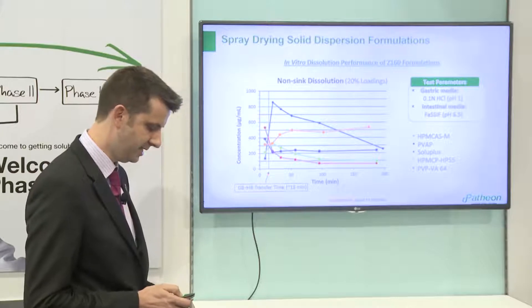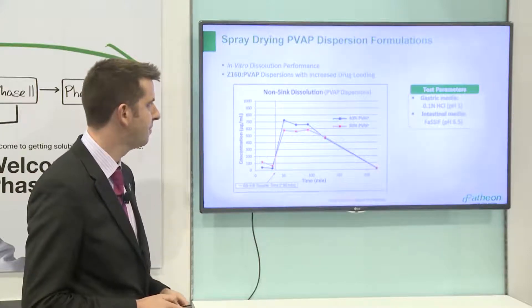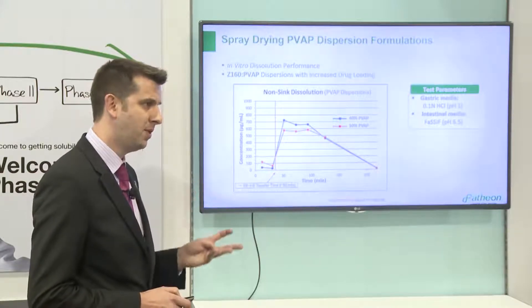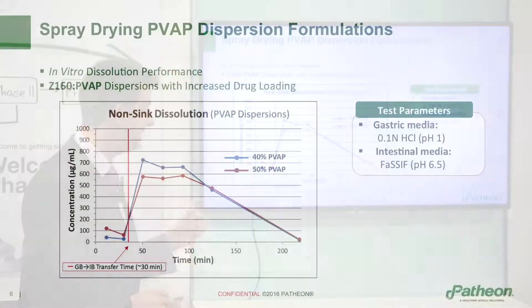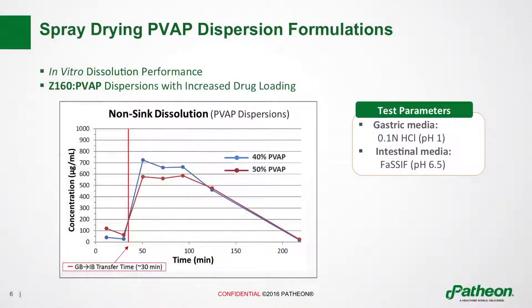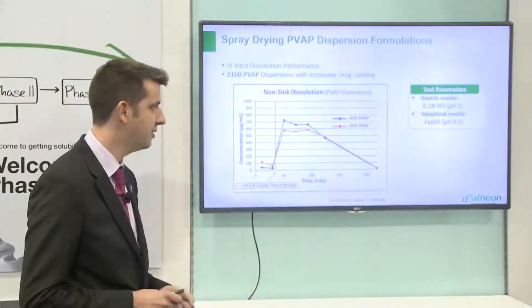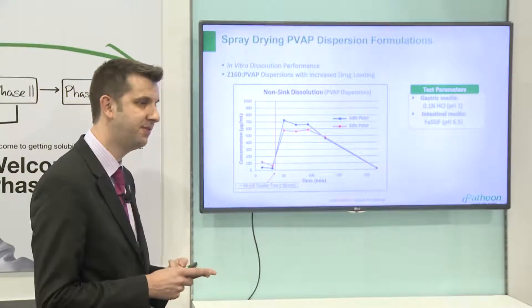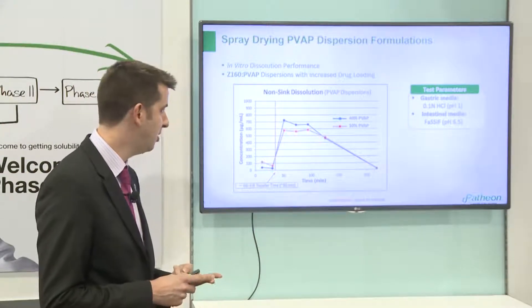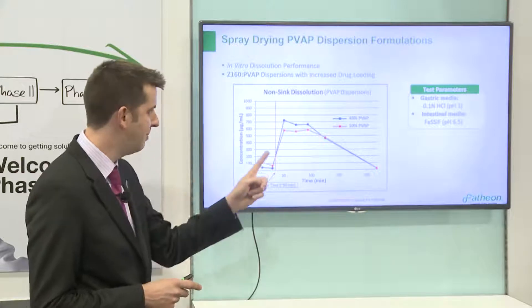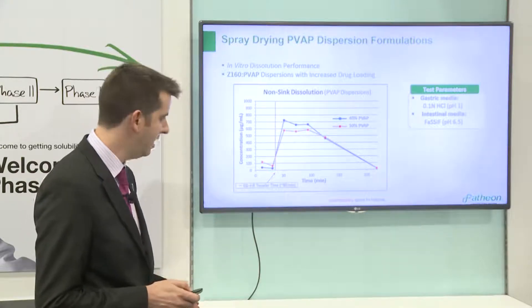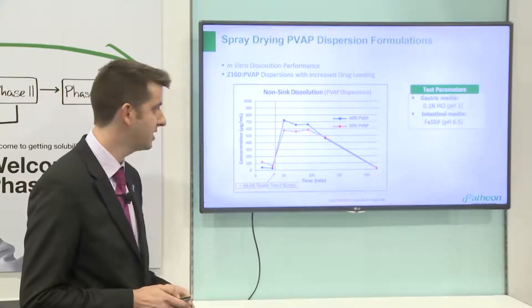We then went back to look at whether we could still get the nice effects we were seeing but with higher drug loadings in the solid dispersions. The higher the drug loading, the smaller our overall dosage form will be, particularly for high dose drugs. You can see here that for this molecule we looked at 40% and 50% drug loadings in the polymer, and we're still getting this really nice kick and maintenance of solubility far exceeding what we'd get with just the crystalline API.